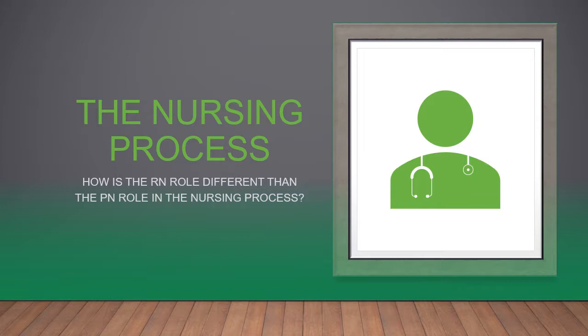In the PN role, the practical nurse assists with the collection of objective and subjective data and reports it to the RN. The PN assists with the creation of a nursing diagnosis, assists with the planning of care and the creation of the plan of care, implements the portions of the care plan within their scope of practice, and participates in evaluation through observations within their scope of practice and reports back to the RN.